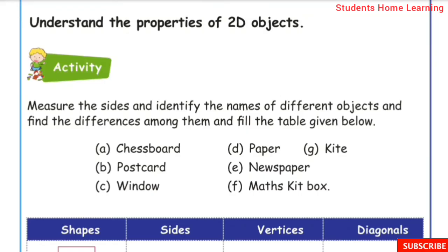Understand the properties of 2D objects. Activity: measure the size and identify the names of different objects, find the differences among them, and fill the table given below. The objects' sizes will be measured and their differences filled into the table.